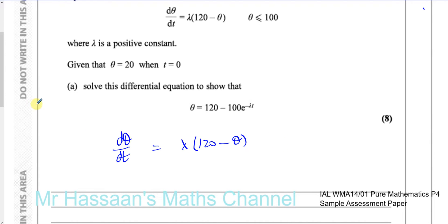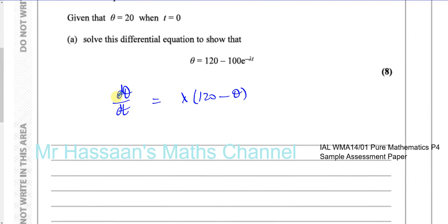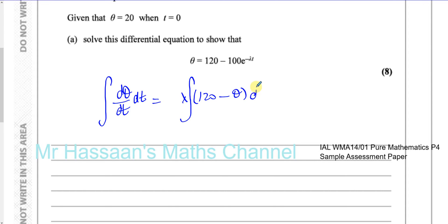In order to solve a differential equation, basically we're going to find what theta is. We're going to integrate both sides with respect to t. As lambda is a constant, I can write the integral here. I'm integrating both sides with respect to t. That's how you deal with differential equations — that's the starting point.